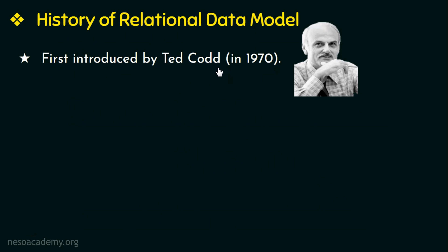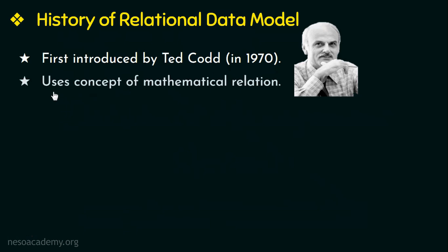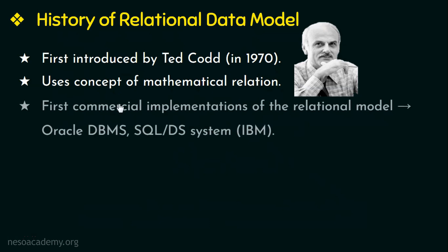This model was all about organizing data into tables with rows and columns. This contribution of Ted Codd produced a dramatic change, and though he made many other contributions to computer science, this invention was his biggest achievement. The relational data model uses the concept of mathematical relations and theoretically it is based on set theory. The first commercial implementation of the relational model was by Oracle, and slowly even IBM started to implement the same.